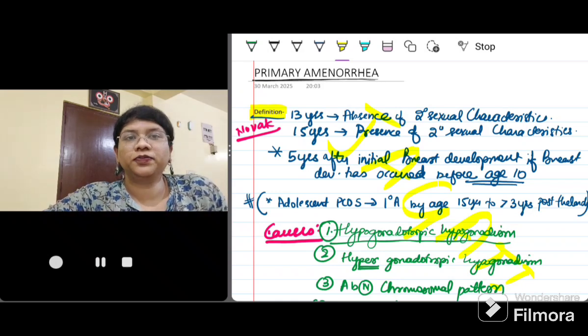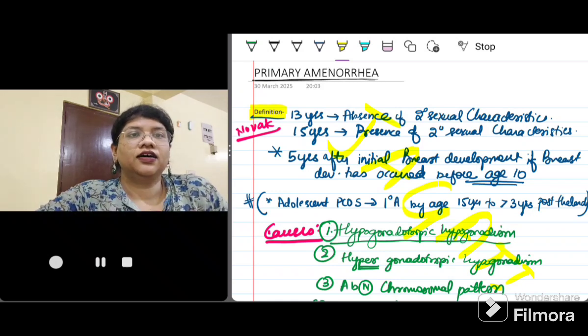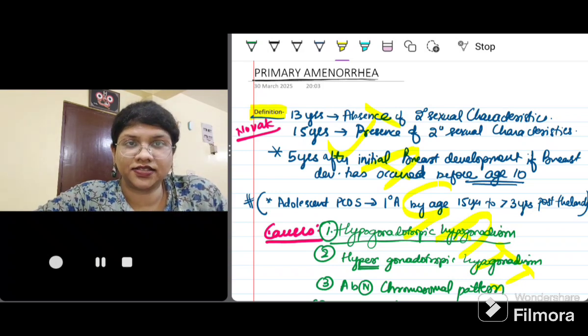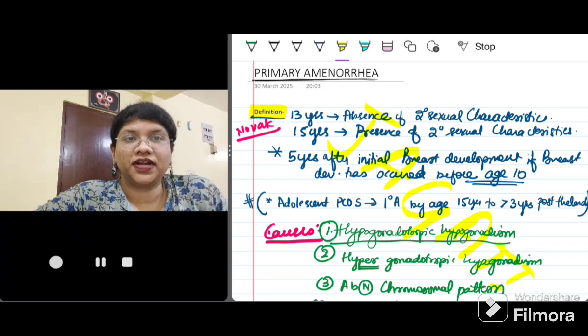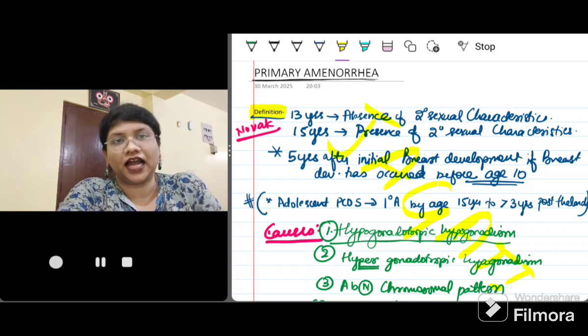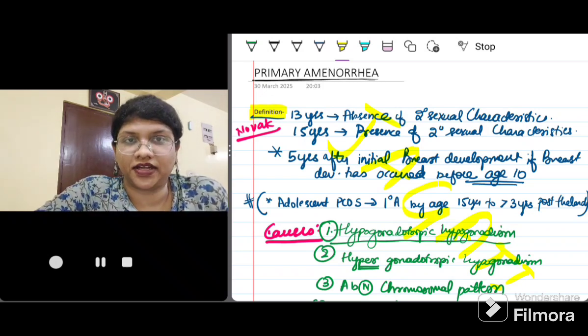Also, a point to be noted is that additionally, they have told if five years after the initial breast development, if the breast development has occurred before the age of 10 years, then that is also considered as primary amenorrhea.